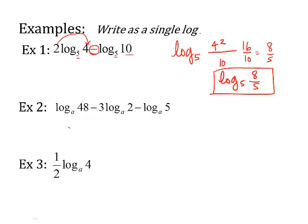So log base a. Now let's look at each term. I've got 48 minus, that 3 means it was a power since it's out front, so it goes up here. 2 to the third times, minus means it's on the bottom as well, 5.